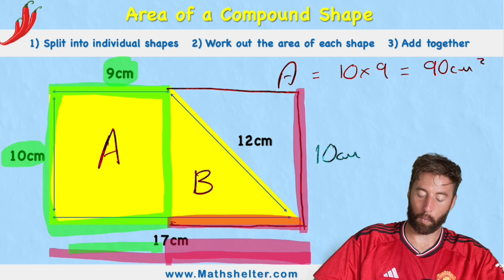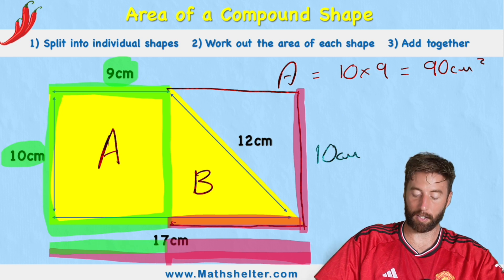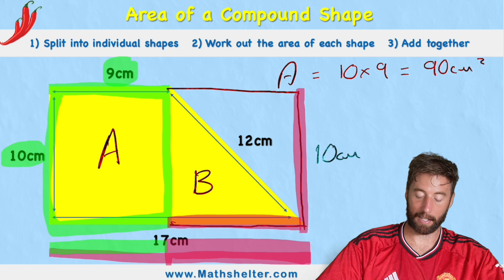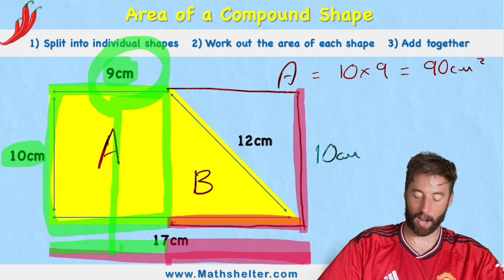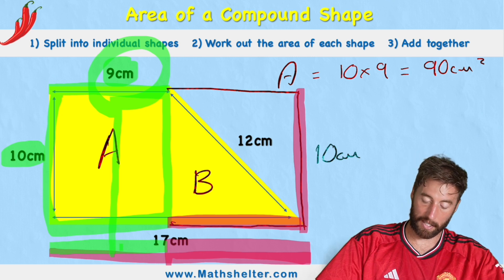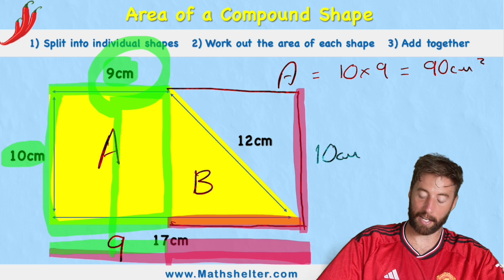So we need to work out what this area, this green area, is and deduct it, subtract it from my 17. So fortunately I can look up my green length and see that the length of that green section is 9 centimeters. So this section is 9 centimeters.